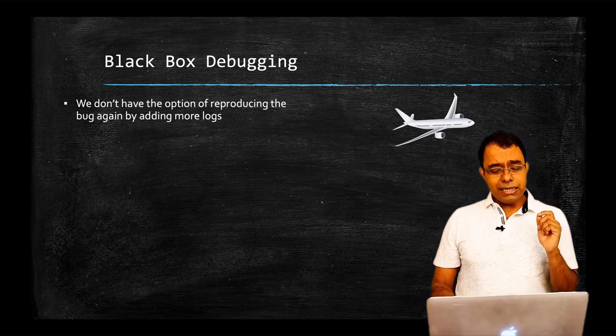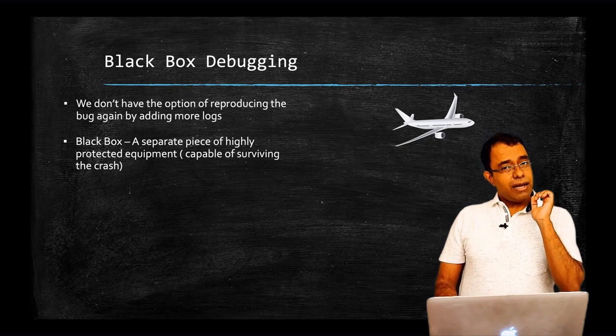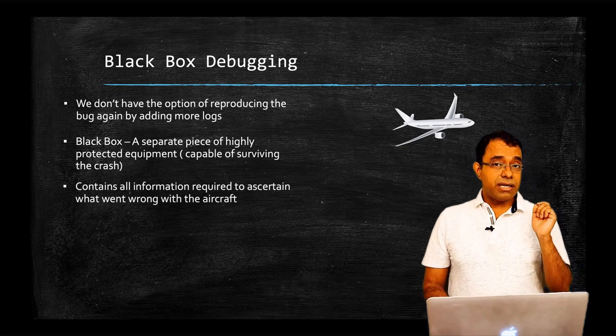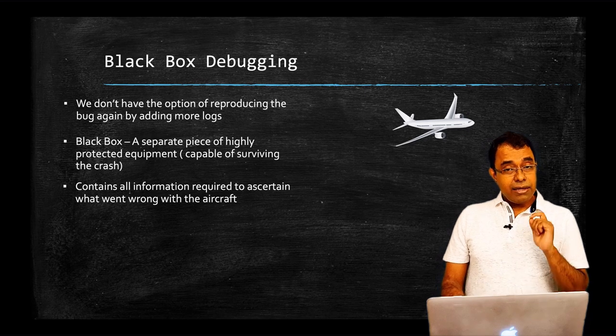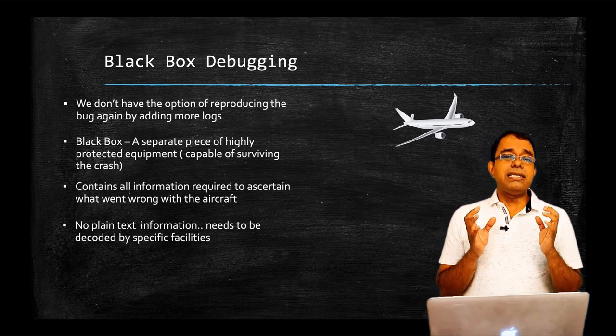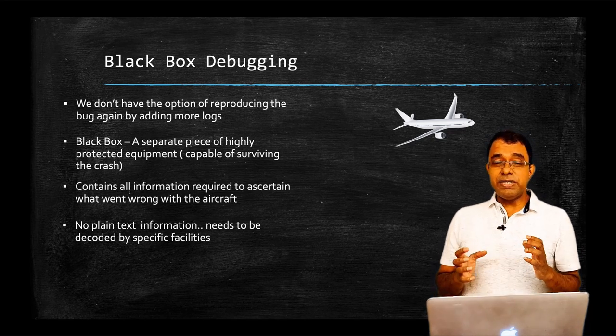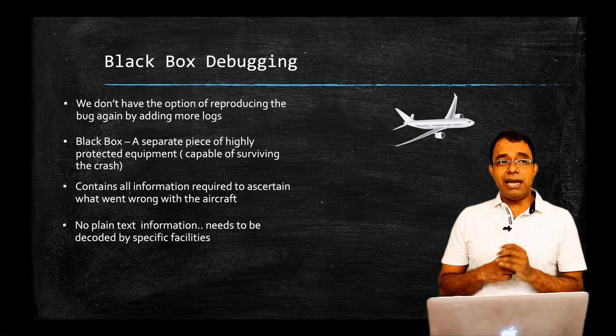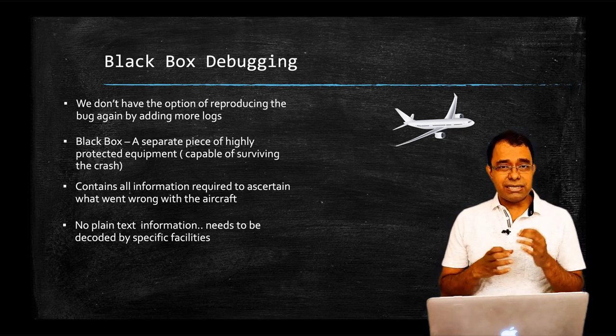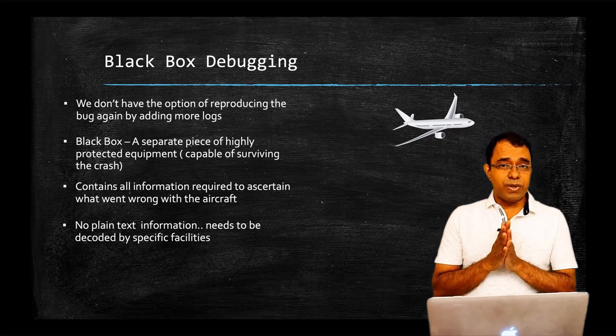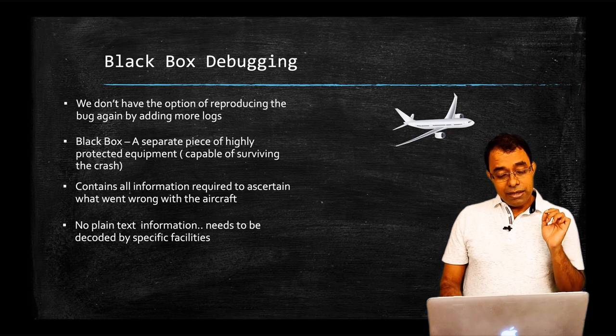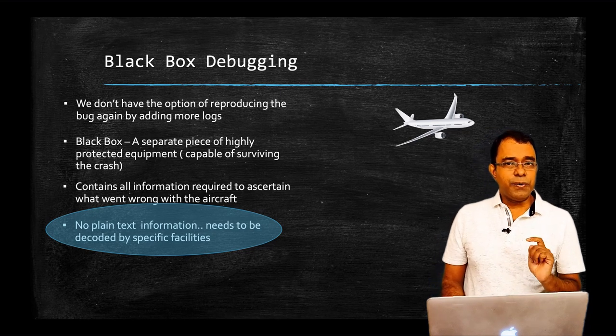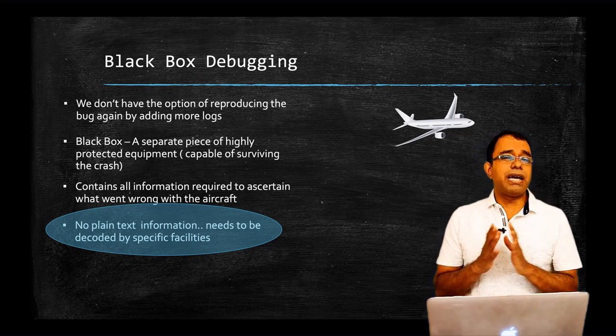So let's talk about black box. It's a totally separate entity which is highly protected and capable of surviving very harsh conditions. It contains all the information required to ascertain what went wrong with the aircraft. And last but not the least, it doesn't contain information in the plain text format, which means that nobody can just pick up the black box and decode what went wrong with the system. It contains encoded information and the ability to decode those information is there only in the specialized labs of the world and there are very limited amount of those kind of labs. Remember this point, we will revisit this point.